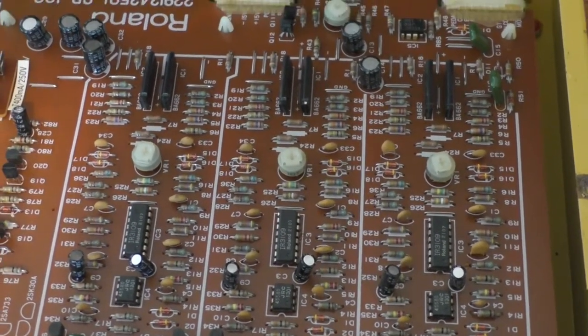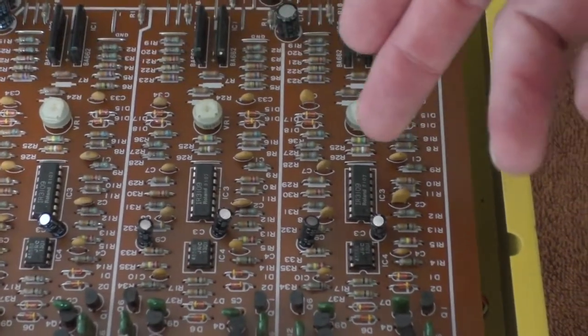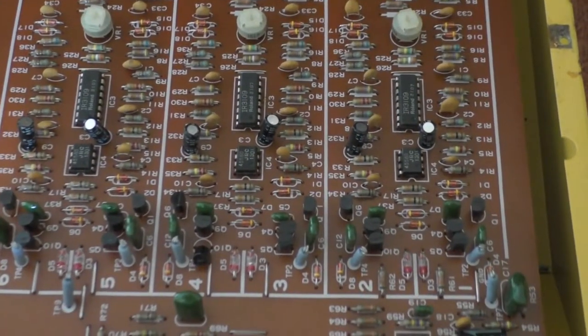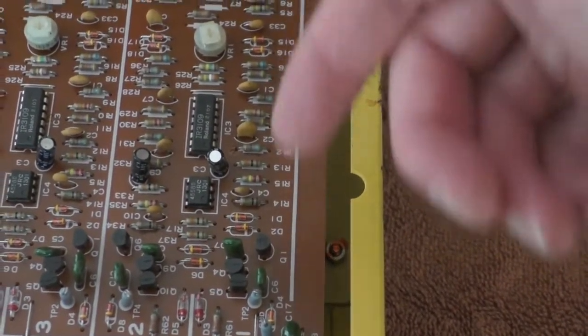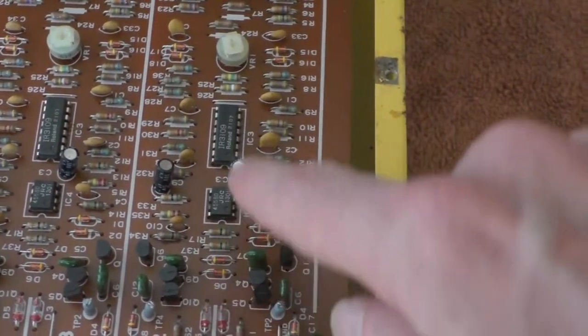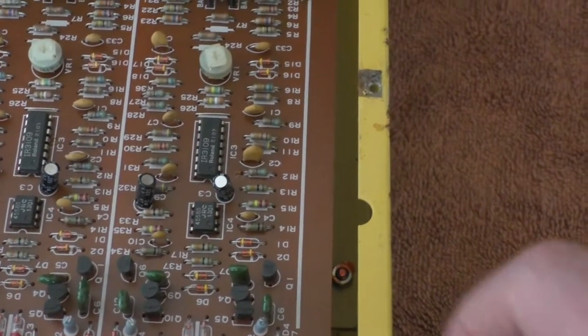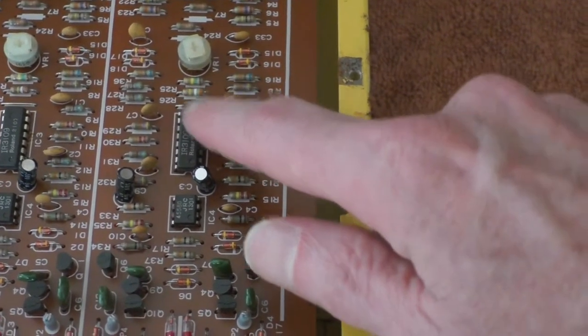This top board is the voice board, and you'll notice that we have three strips. Now these three strips are actually the six different voice channels. If you look, you'll notice the parts kind of mirror each other along each side. So you've got one string here, the next string here, and then in the middle are parts that are common to each string.